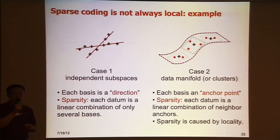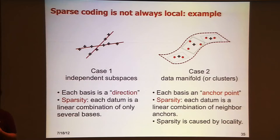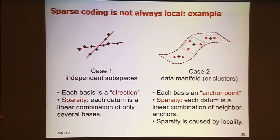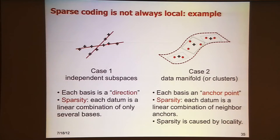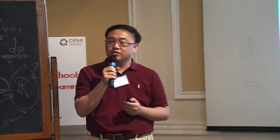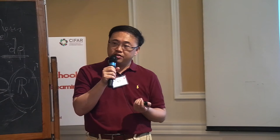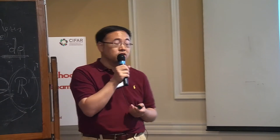Each data point can get a sparse representation by picking up just one dimension. So in this case you get a sparse representation, but it's not local — because, for example, two points that are pretty different and far away can activate the same dimension in the code. And then data points close to each other might activate different dimensions. So the representation is sparse, but not necessarily local.